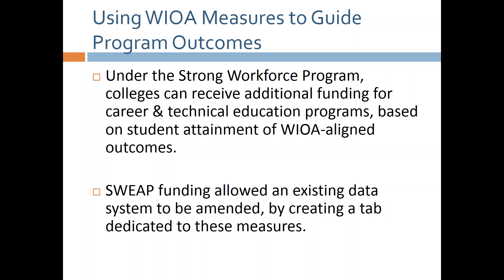The state allocated $200 million in new funding for CTE programs and required that a portion be based on WIOA measures, where colleges were expected to understand how well they were helping students complete programs and get into living wage jobs with stronger earnings. This would inform how they planned to use their funds and how much money they would receive over time.